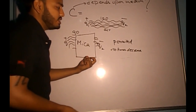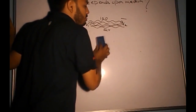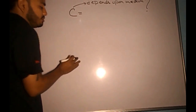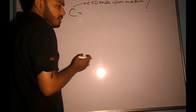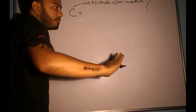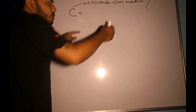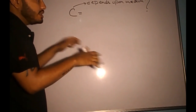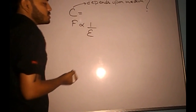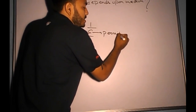So this is what permittivity means. The Coulomb's constant C must be inversely proportional to the symbol epsilon (ε), which is used to denote permittivity.